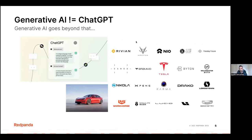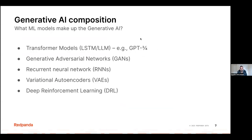When it comes to commercialization and marketing, mainstream media and social media have made us believe generative AI is all about ChatGPT and a few other tools — but that's wrong. Generative AI goes beyond those tools. It's like when we talk about electric cars: Tesla does not represent all electric cars. There are many other electric variants from manufacturers like BMW, Mercedes, and Ford.